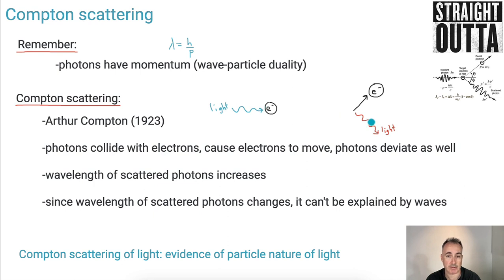The light can then bounce off the electron, send the electron flying at one angle, and there's some scattered light. Scatter means it's sent off at a different angle. But what was interesting was also that the light, the actual wavelength of light changed.